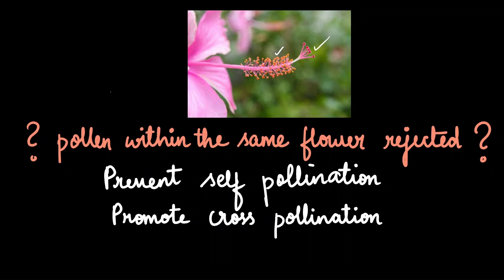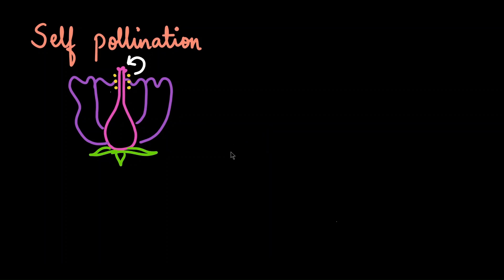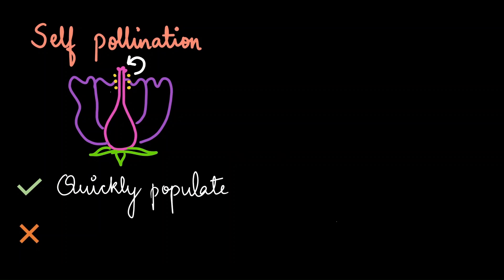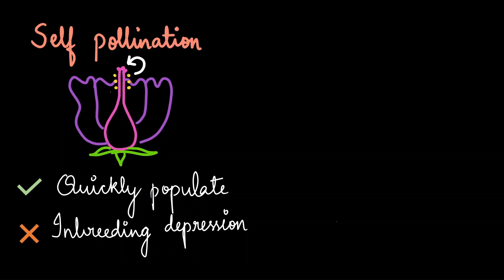Before discussing pollen-pistil interaction, let us understand self and cross-pollination. Self-pollination is where pollen from a flower falls on the stigma of the same flower. The advantage is quick population growth, but the disadvantage is that continuous self-pollination over many generations leads to inbreeding depression — causing stunted growth, decreased yield, and reduced immunity in plants.